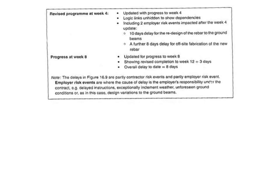They continue with the discussions and then the revised program at week four update — logical links are unhidden to show dependencies, including two employer risk events impacted after week four: a 10-day delay for the redesign of the rebar to the ground beams, and then a further 8-day delay for off-site fabrication of the new rebar. Then your progress at week eight — a snapshot at week eight — with the updated revised completion date showing 12 plus 3 days, so your overall delay is now eight days.